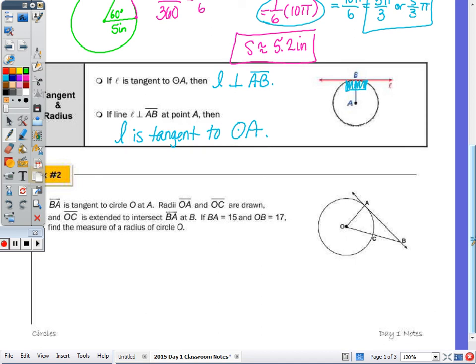Number 2: line BA is tangent to circle O at A. We have radii OA and OC, and OC is extended to intersect line AB at B. If length BA is 15 and length OB is 17, find the measure of a radius. Since AB is a tangent line, the radius is perpendicular to the tangent line at the point of tangency.